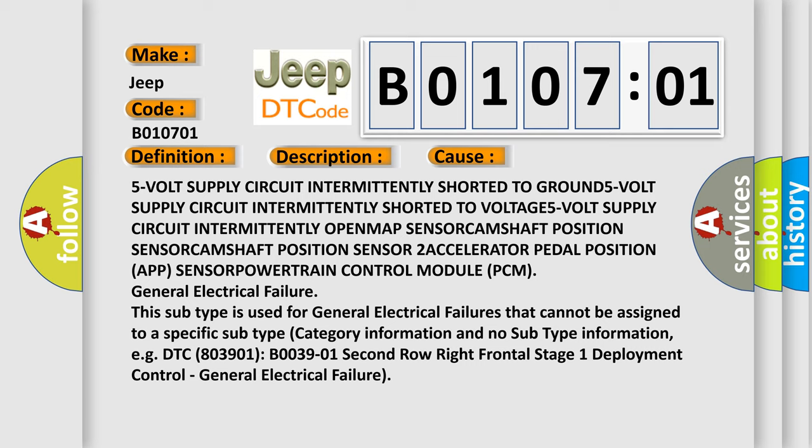This subtype is used for general electrical failures that cannot be assigned to a specific subtype category information. For example, DTC B0039-01 2nd row right frontal stage 1 deployment control, general electrical failure.